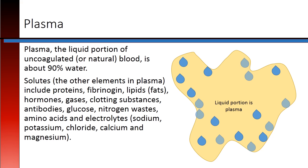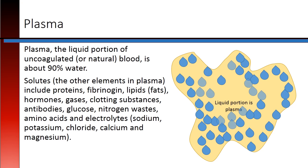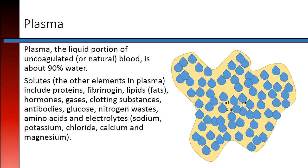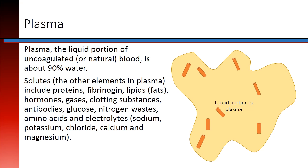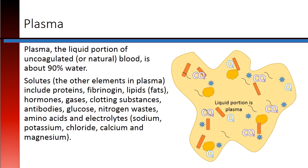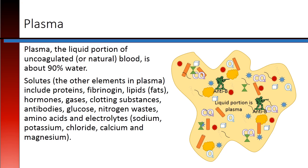Plasma, the liquid portion of uncoagulated or natural blood, is about 90% water. Solutes, or the other elements in plasma, include proteins, fibrinogen, lipids, hormones, gases, clotting substances, antibodies, glucose, nitrogen wastes, amino acids, and electrolytes such as sodium, potassium, chloride, calcium, and magnesium.